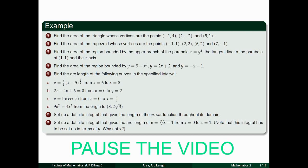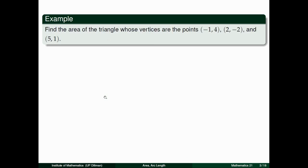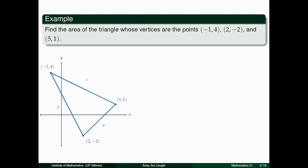I hope you tried to answer these problems, because now we will start with the first example: Find the area of the triangle whose vertices are the points (-1, 4), (2, -2), and (5, 1). Let's start with graphing the points so we can see what the triangle looks like. We graph the points and connect them with line segments, labeling them as A, B, and C. The form they make is a triangle, and we want to find the measure of its area.